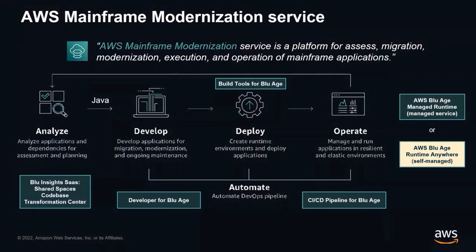Hello everyone, my name is Jan Kindelberger. I'm working as a specialist solutions architect and part of a worldwide team working on mainframe migration and modernization to AWS. The AWS Mainframe Modernization service was announced at re:Invent 2021 and made available in June this year. Its main goal is to simplify and accelerate customer mainframe migration projects. The service includes a set of tools for planning, migrating, modernizing, and running, with a managed service runtime that takes care of security, high availability, performance, and system management requirements.